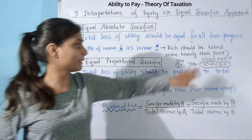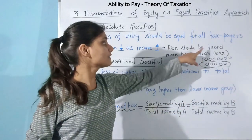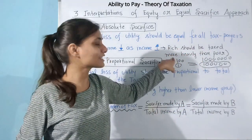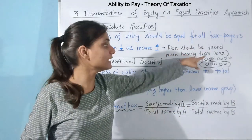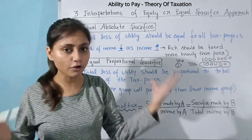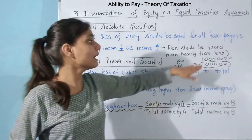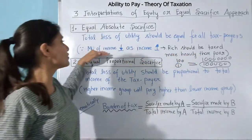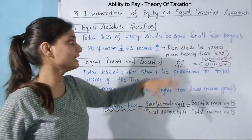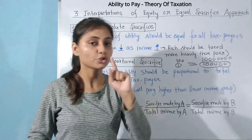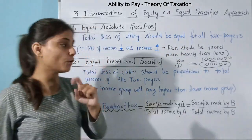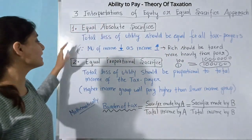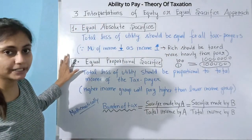So we can see that the richer group should be taxed more heavily than the poor — because we know that at a higher income level, the marginal utility of income decreases. This is why the rich should pay more. This is our second interpretation.